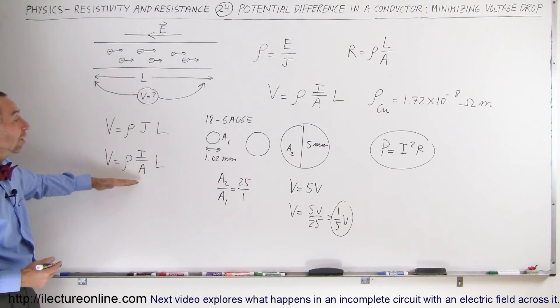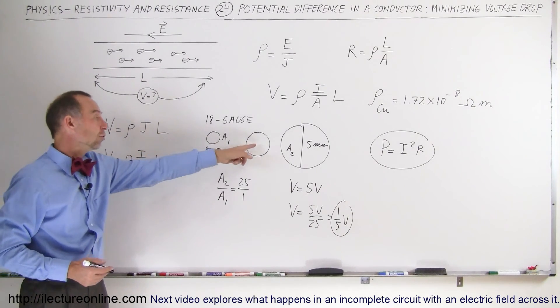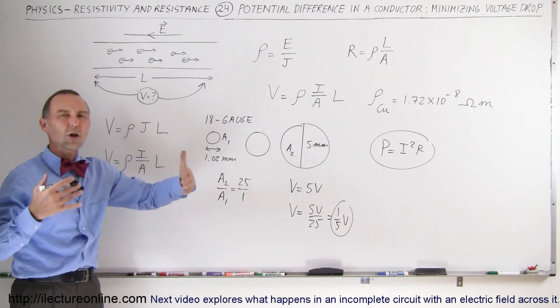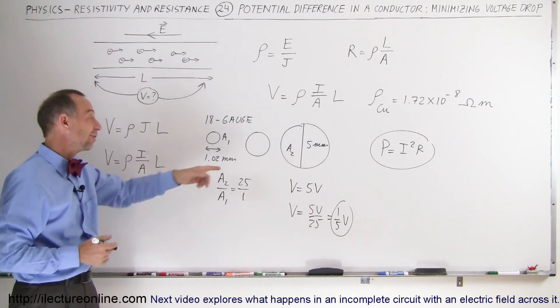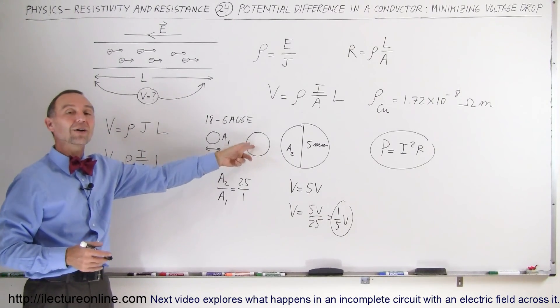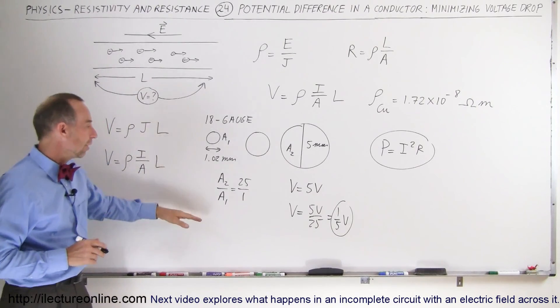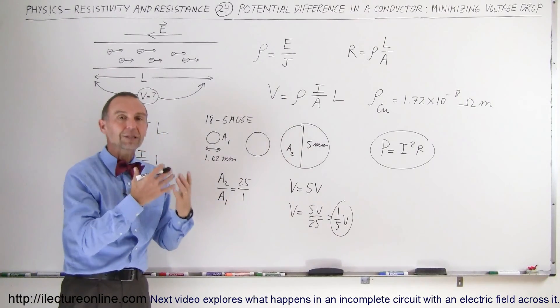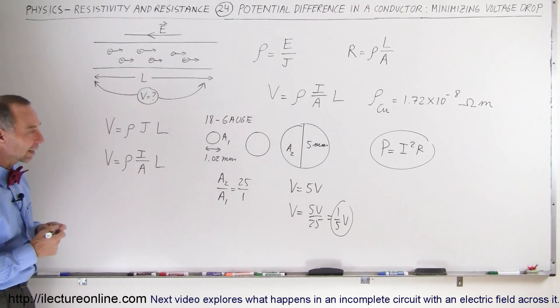But to keep the voltage drop in check, for example in your house, you want to make sure that you use a big enough gauge wire. Use a smaller gauge, which means bigger diameter. So use a bigger diameter wire to have a smaller voltage drop, and therefore you have the correct amount of voltage reaching the outlets where the voltage is needed.